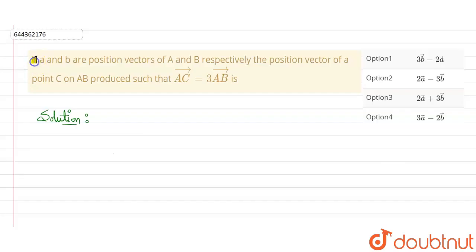Hello everyone. In this question it is given that if A and B are position vectors of A and B respectively, then position vector of a point C on AB produced such that AC vector is equal to thrice of AB vector.